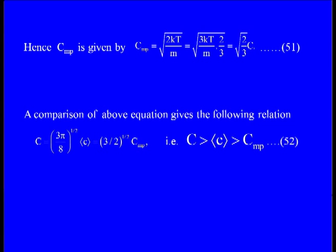Comparing the three velocities: most probable velocity c_mp = √(2kT/m), which can be written as √(2/3) times the RMS velocity. Since √(2/3) < 1, the most probable velocity is less than the RMS velocity. The beautiful relation among the three velocities is: RMS velocity > mean velocity > most probable velocity.